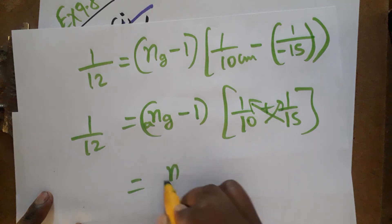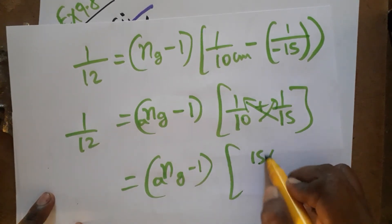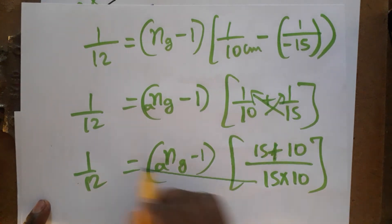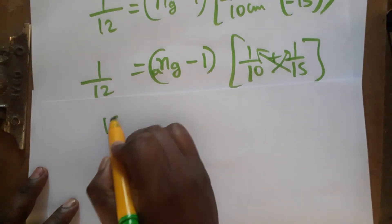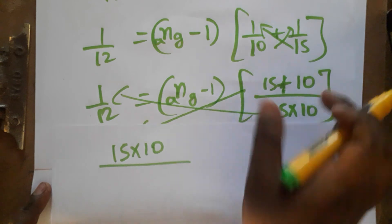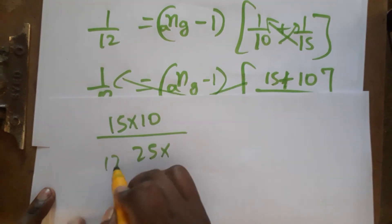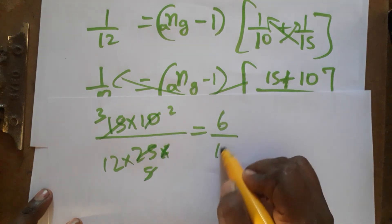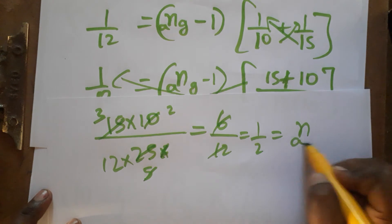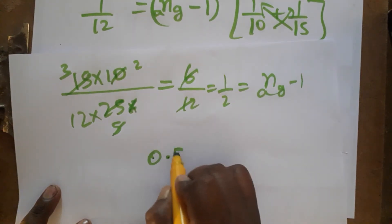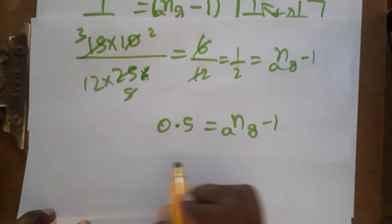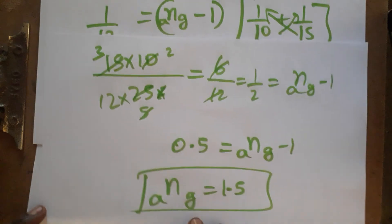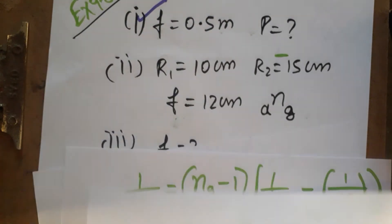So we have 1 over 12 = (n_glass minus 1) times (1/10 plus 1/15). Computing 1/10 plus 1/15 gives (15 plus 10) over (15 times 10) = 25 over 150. Cross-multiplying: (n_glass minus 1) = (1/12) times (150/25) = 150 over 300 = 1 over 2 = 0.5. So n_glass minus 1 equals 0.5, which means n_glass equals 1.5. The refractive index of the glass lens is 1.5.